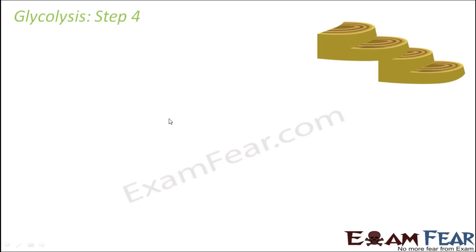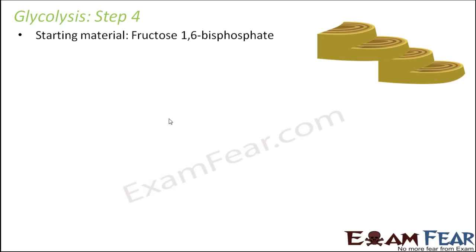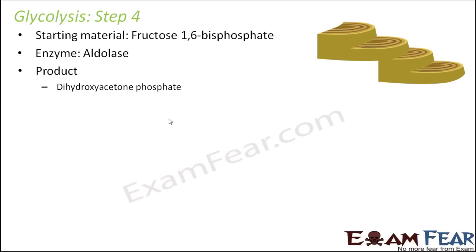So what happens next in step 4? The starting material is going to be the product which was formed in step 3, that is fructose 1,6-bisphosphate. The enzyme which will act here is aldolase, and there are two products which will be formed: dihydroxyacetone phosphate and glyceraldehyde phosphate.